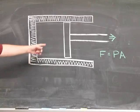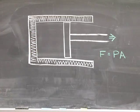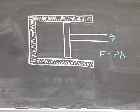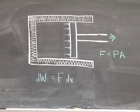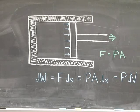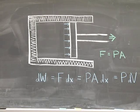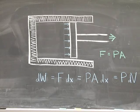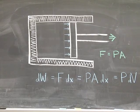Consider a PVT system confined to a cylinder with a piston. The total force on the piston F is the internal pressure times A, the cross-sectional area. If the piston is pushed outward by an amount dx, the work done is F times dx. Since force equals pressure times area, and area times dx equals the change in volume, the small amount of work done is P times dV. This is true for any change in volume of a PVT system — the work done on the surroundings is P dV.